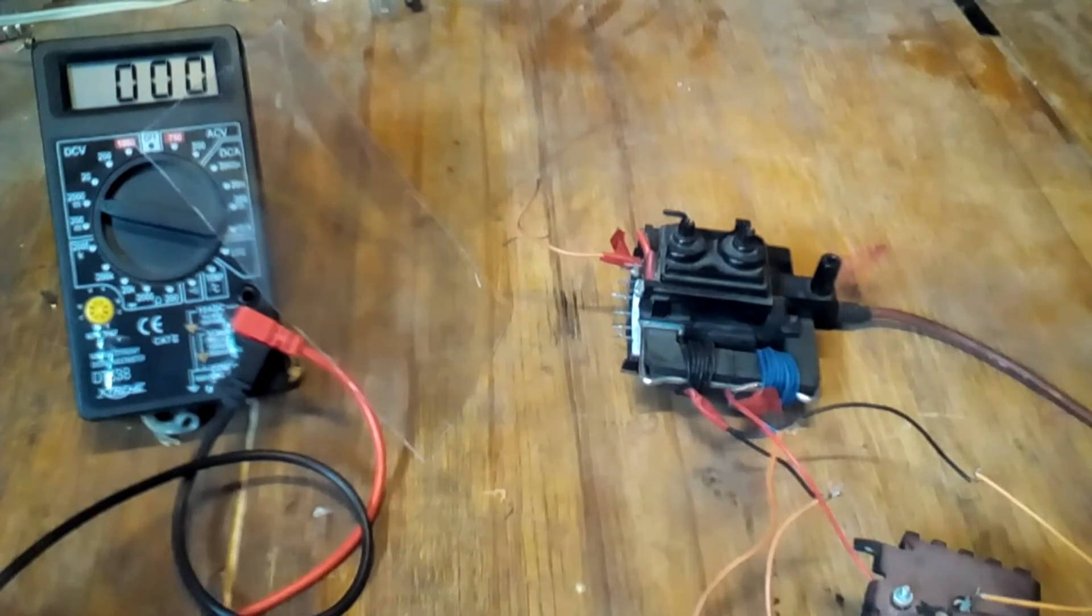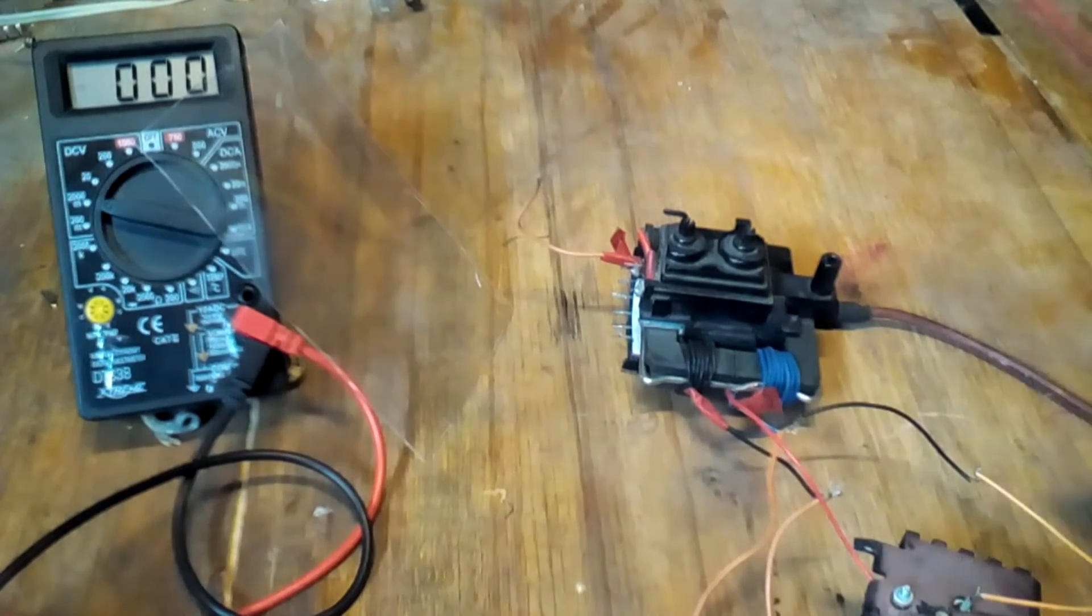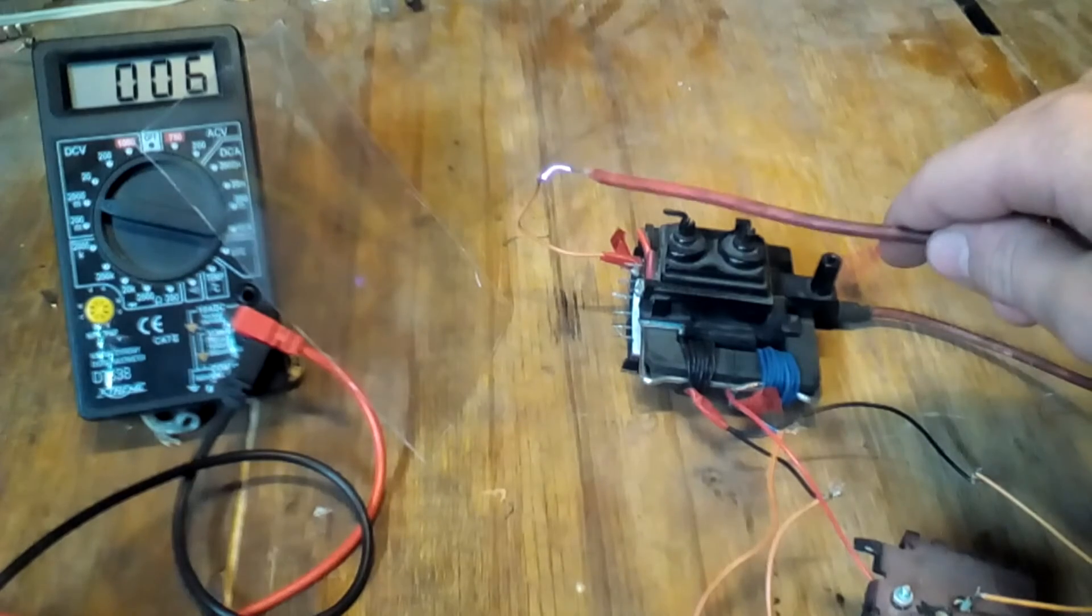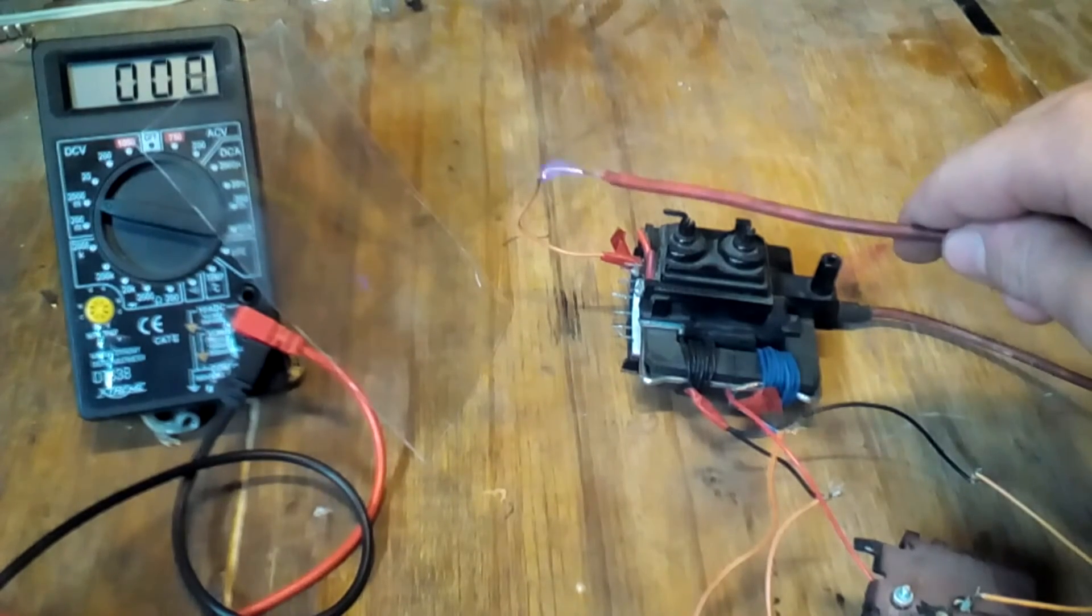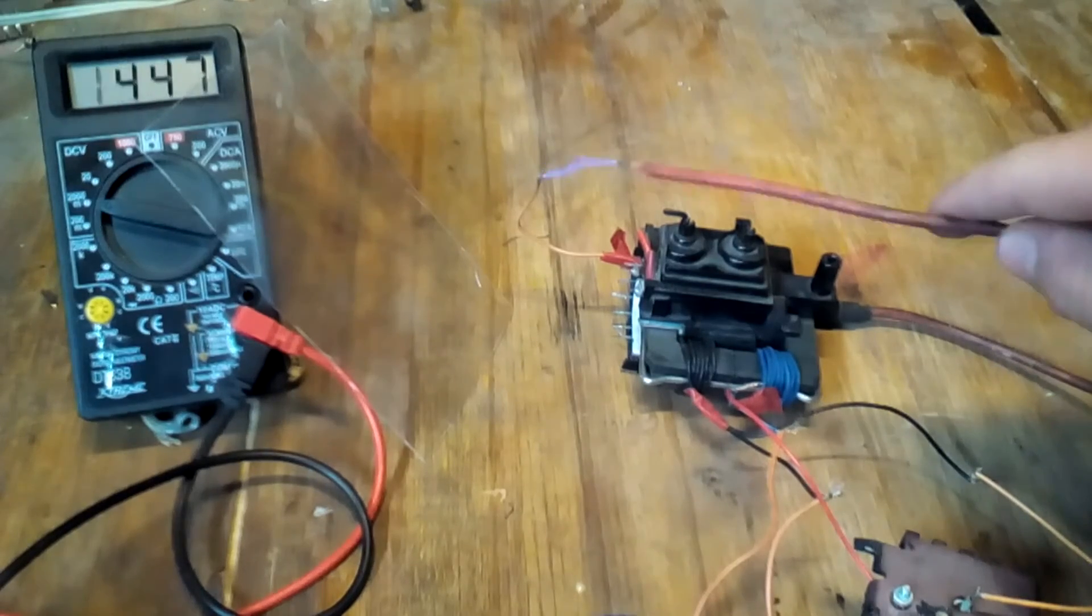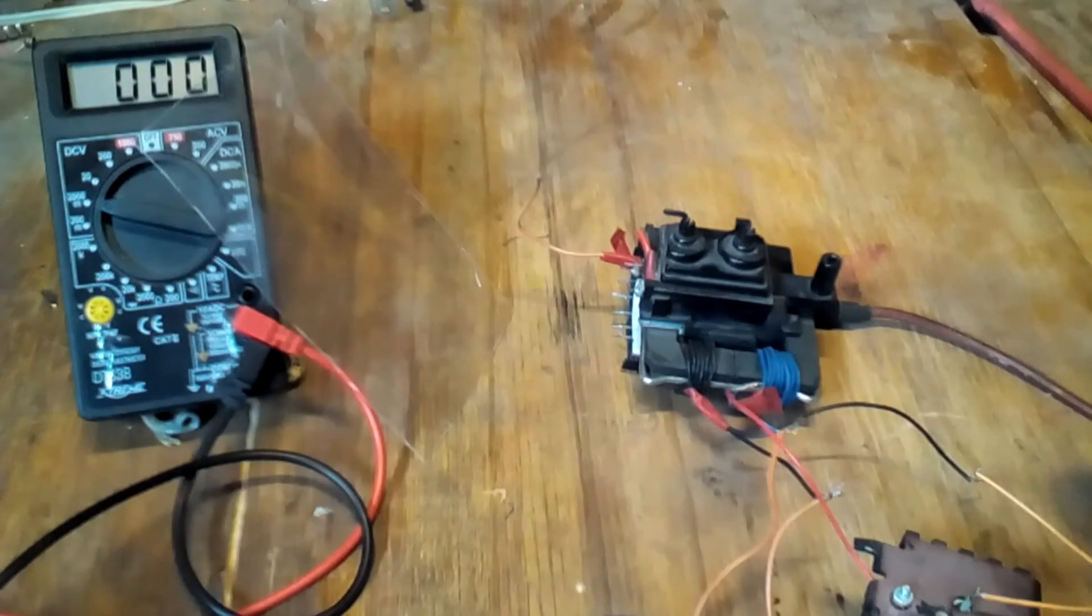Watch the multimeter. When the arc is stable, it draws 6 amps. And when it's like this, it reads volts.